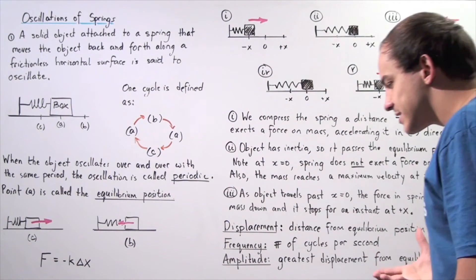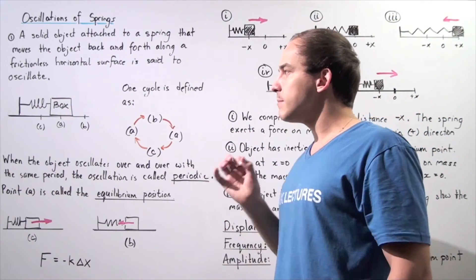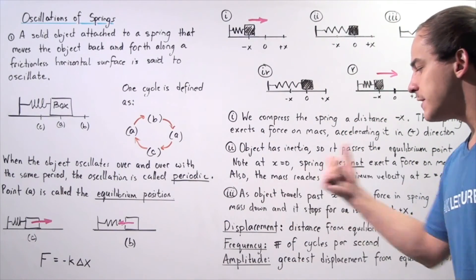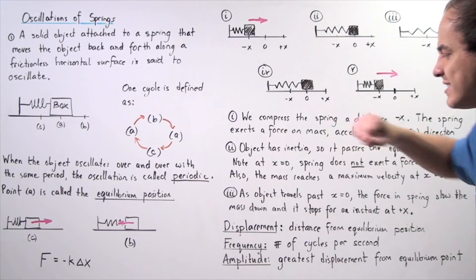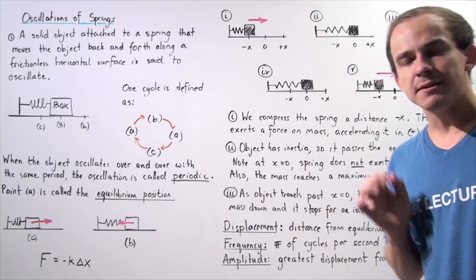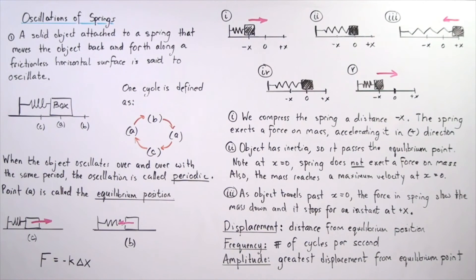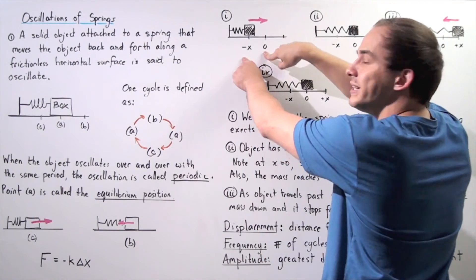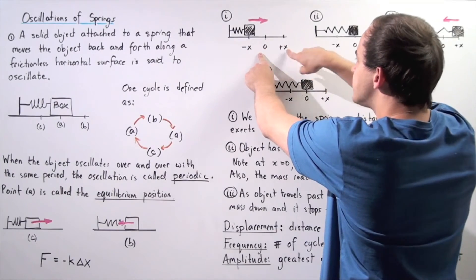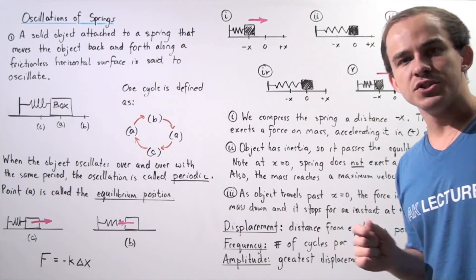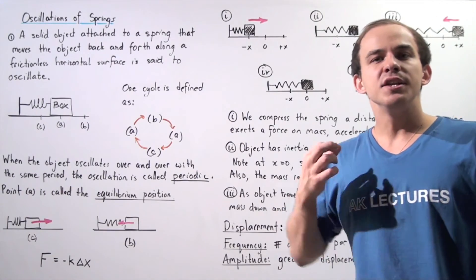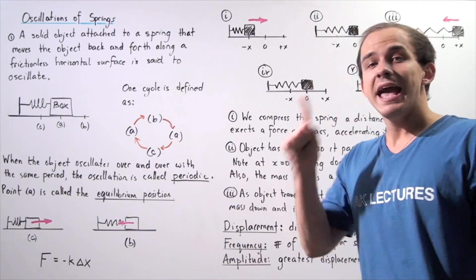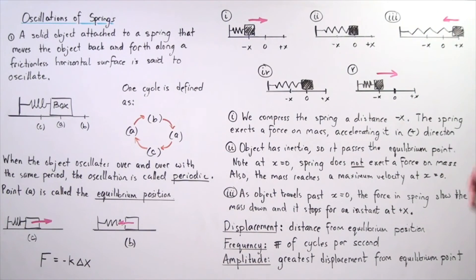Whenever we discuss the oscillation of such an object, we have to talk about a few physical quantities: displacement, frequency, and amplitude. Displacement is simply the distance from the equilibrium position — from the equilibrium to one side is negative x, and to the other side is positive x. Frequency is the number of full oscillations an object makes in one second, with units of cycles per second. The period is simply the inverse of frequency — it's the number of seconds it takes the object to make one full cycle.